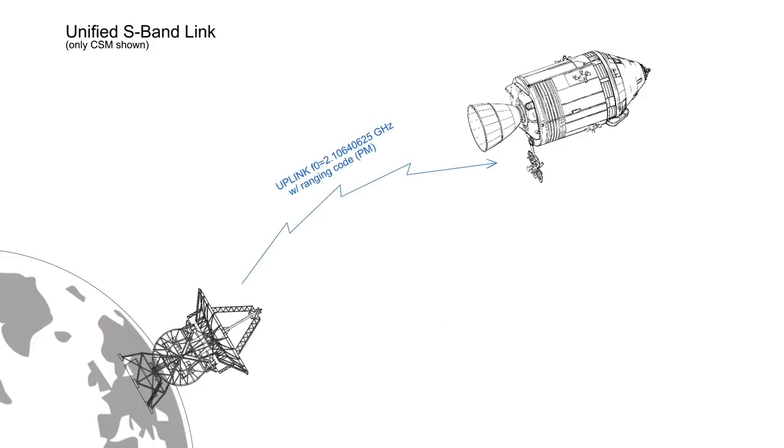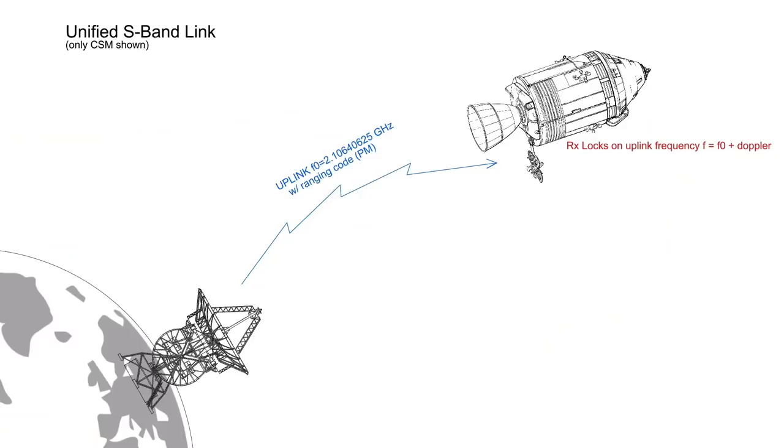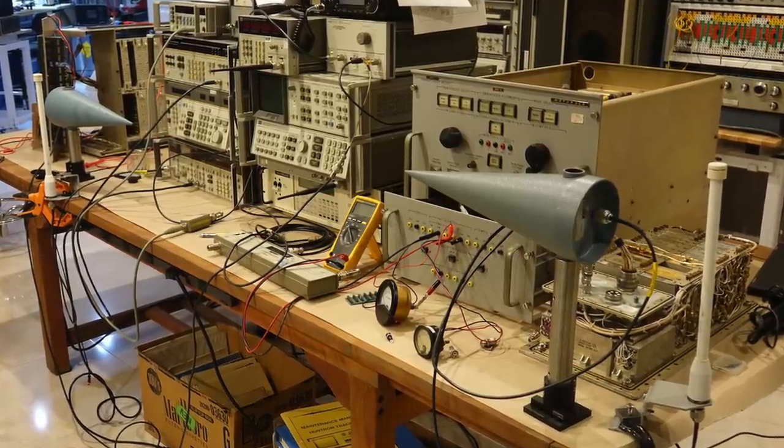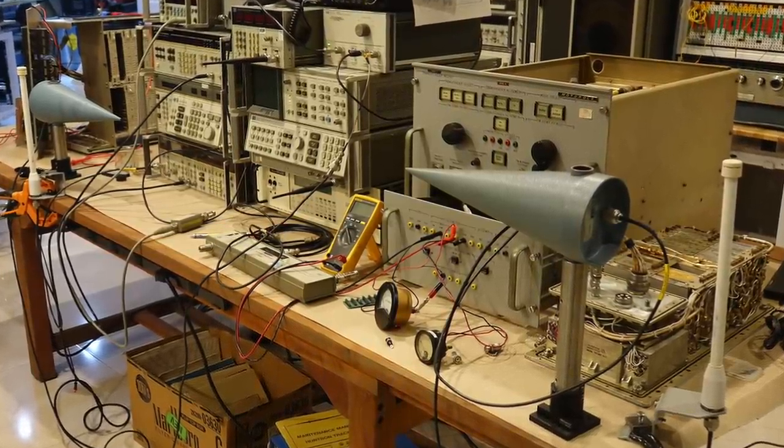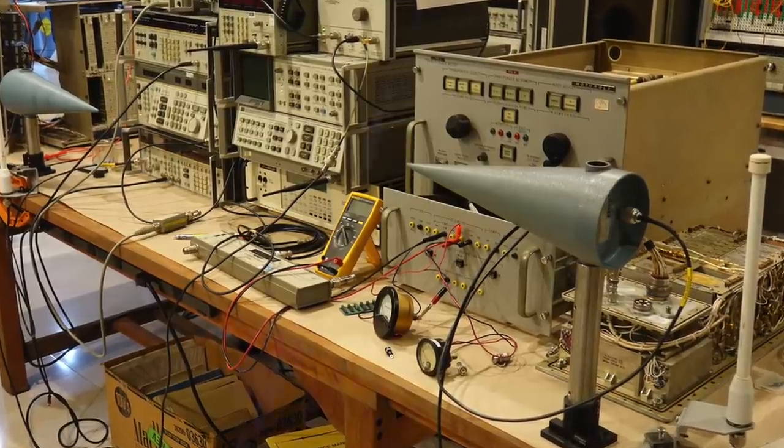In the last episode, we were able to send a signal from the ground and lock our Apollo transceiver on it. Moreover, we turned the ranging function on, and had the Earth's tone turned around and sent back to the ground station. And we were elated to receive the tone back after a round trip to the Moon. Er, I mean, a round trip to the other end of my big wooden table. But for us, that was as good as the Moon.